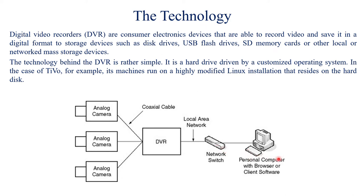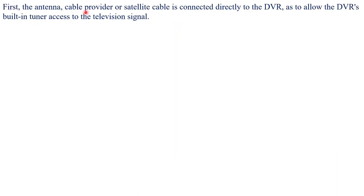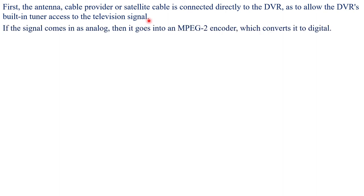Now we'll see how DVRs are used to record live television. The antenna, cable provider, or satellite cable is connected directly to the DVR so as to allow the DVR's built-in tuner to access the television signal. If the signal comes in as analog, it goes into the MPEG-2 encoder which converts it into digital.